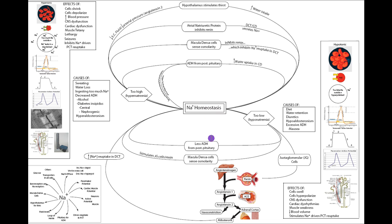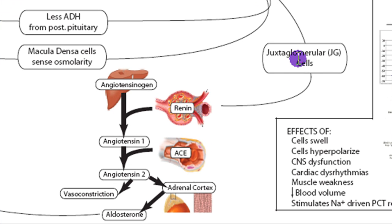If there's too little sodium, as in hyponatremia, the JG cells will sense less stretch because less sodium also means less water. Less sodium and water means less fluid, so less blood pressure. Lower blood pressure is going to be sensed by less stretch at the JG cells surrounding the afferent arteriole and glomerulus of the nephron. In response, they're going to release renin, which will increase absorption of sodium and correct the hyponatremia.